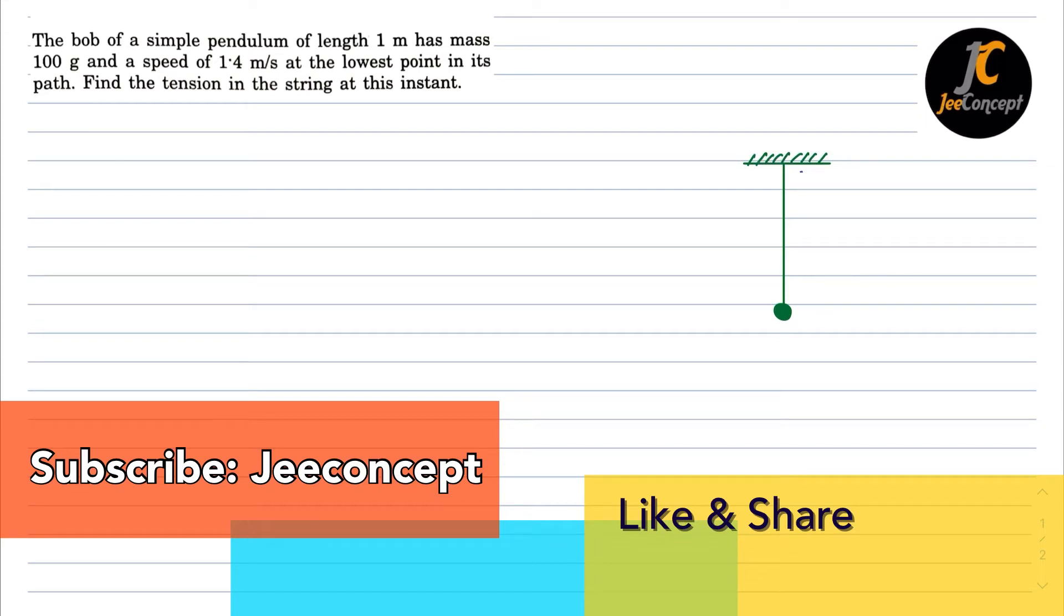Hello everyone, in this video we will find the solution of the problem which says the bob of a simple pendulum of length 1 meter has mass 100 gram and a speed of 1.4 meter per second at the lowest point in its path. Find the tension in the string at this instant.